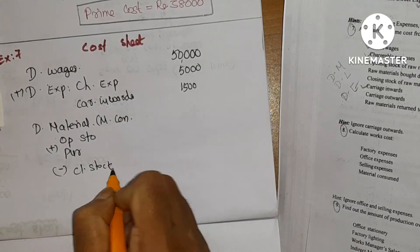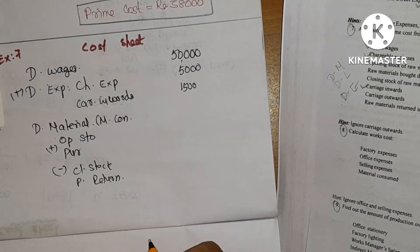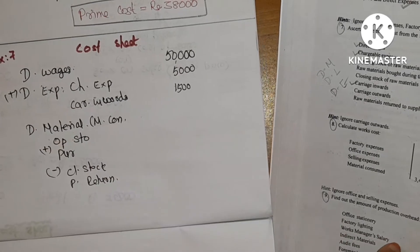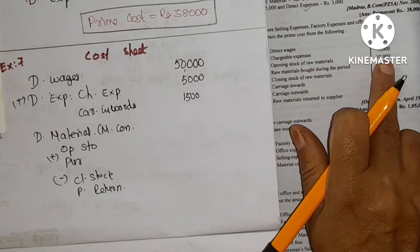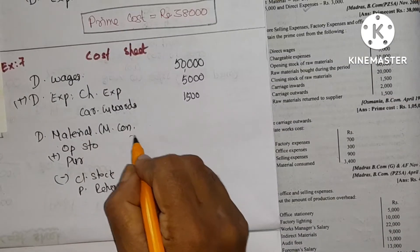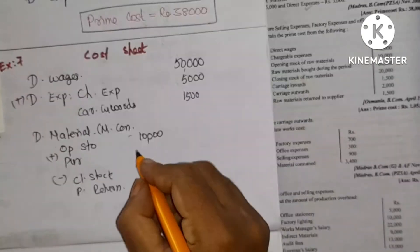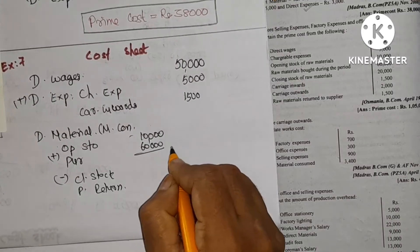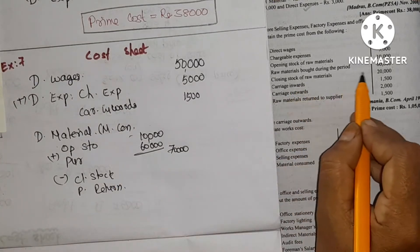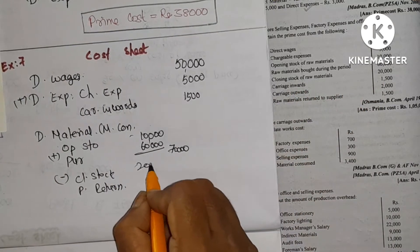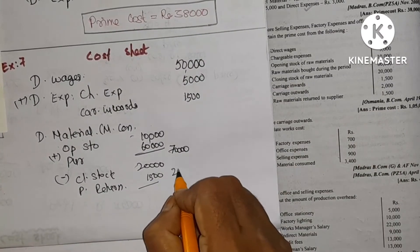Opening stock is 10,000. Purchases are 60,000, giving a total of 70,000. Then we subtract closing stock of 20,000 and purchase return of 1,500, totaling 21,500 to be deducted.